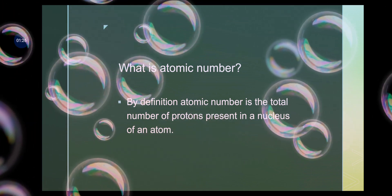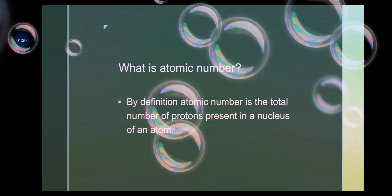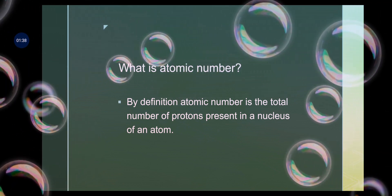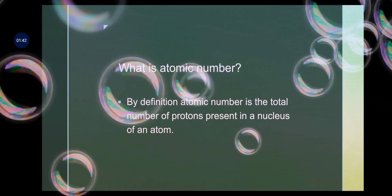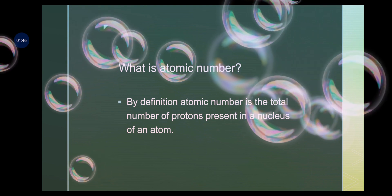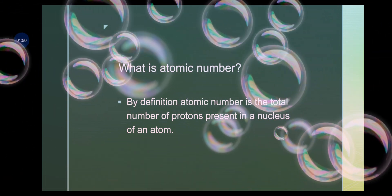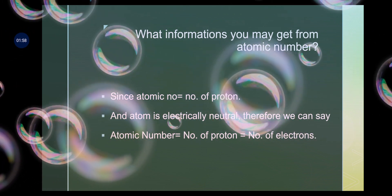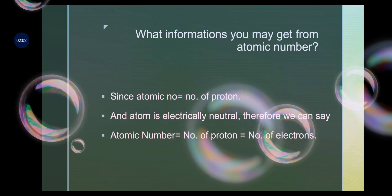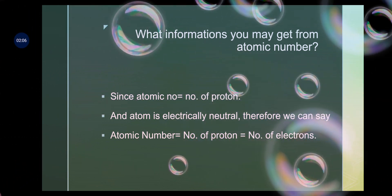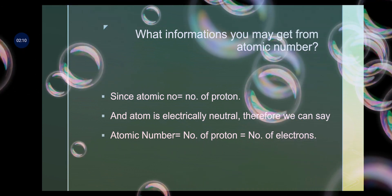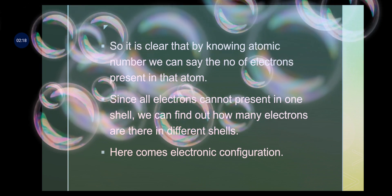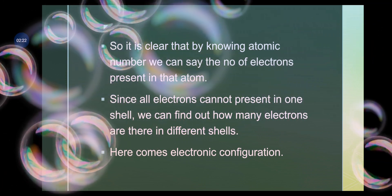What is atomic number? As you learned in class 7, the atomic number is the total number of protons present in the nucleus of an atom. If the nucleus contains 5 protons, the atomic number is 5; if it contains 15 protons, the atomic number is 15. Since an atom is electrically neutral, the number of protons must equal the number of electrons. Therefore, the atomic number also equals the number of electrons in that atom.